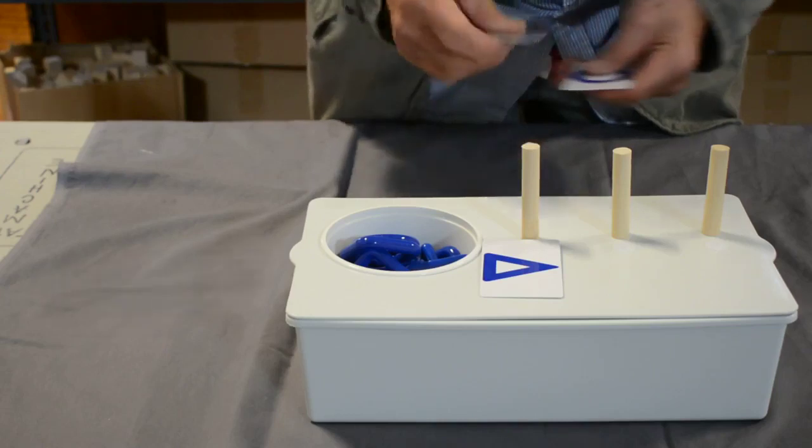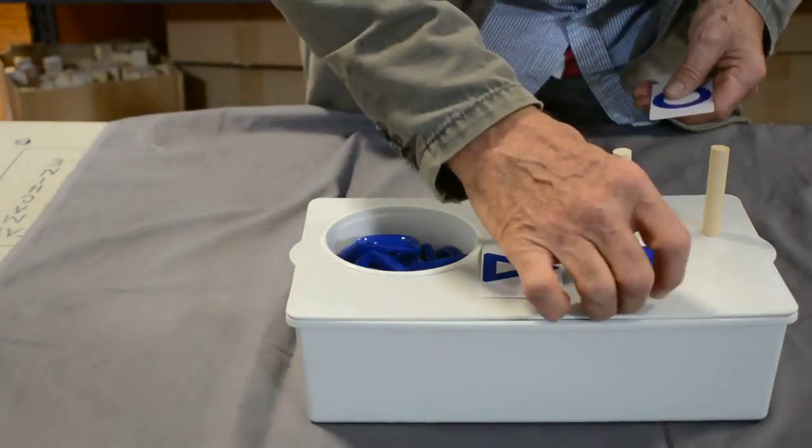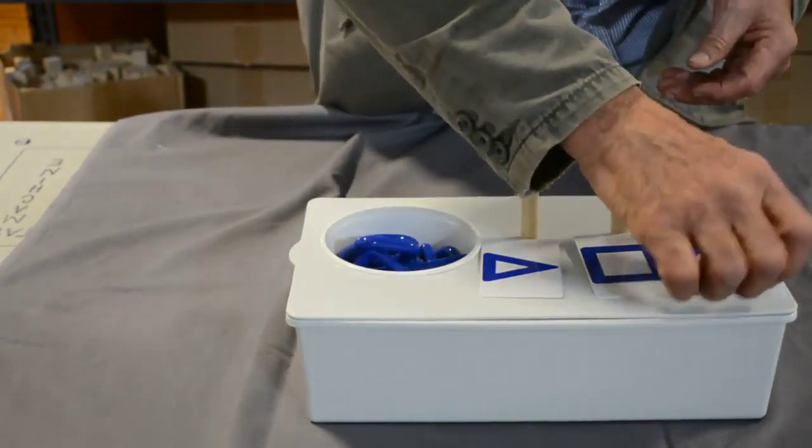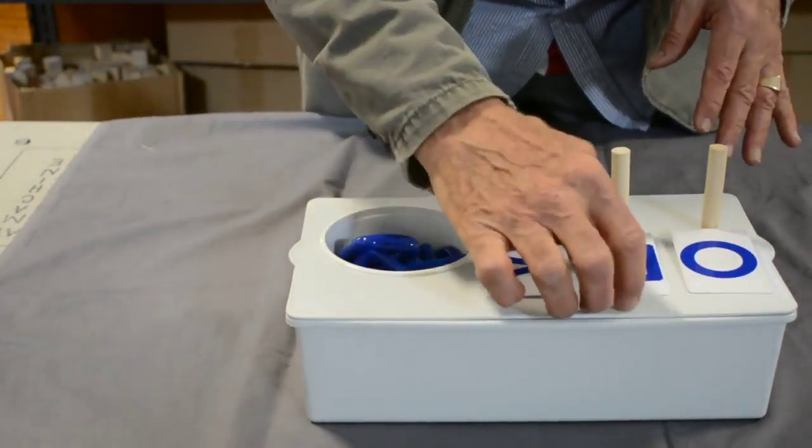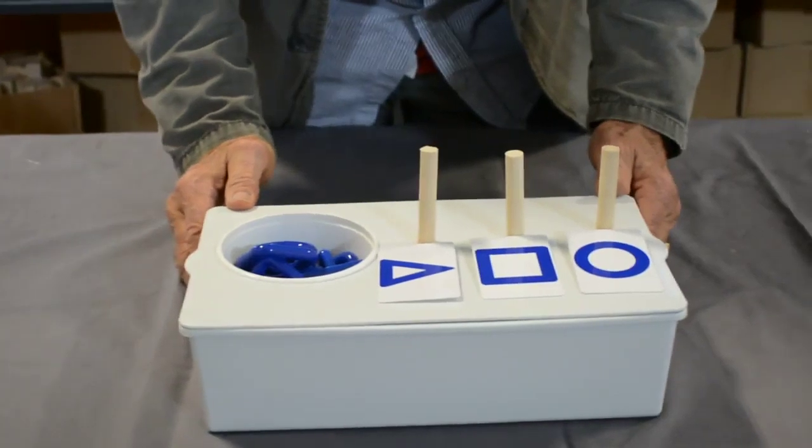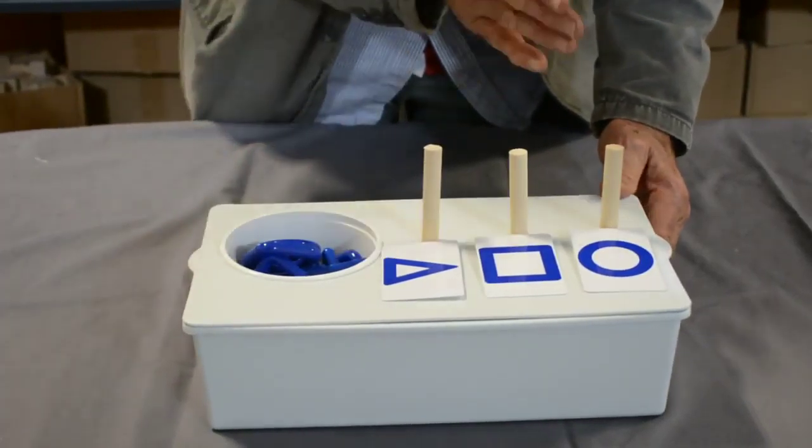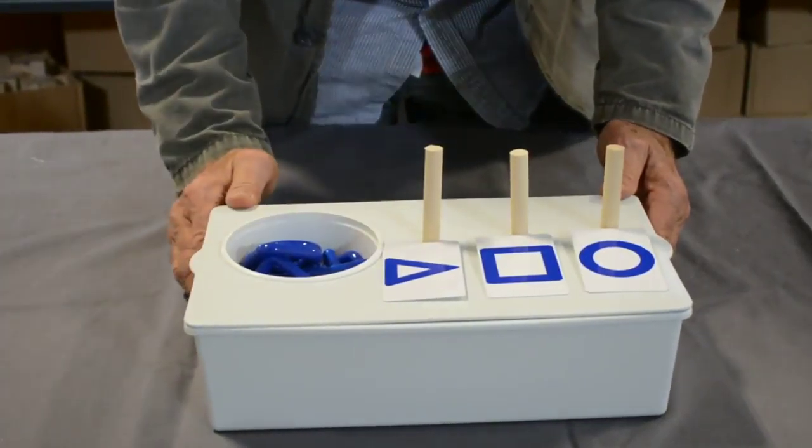You have three cards, they get affixed to the Velcro that's there. Again, the teacher can change the order of the shapes to ensure that the student is not into a routine which can quickly be picked up.